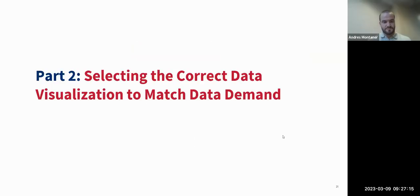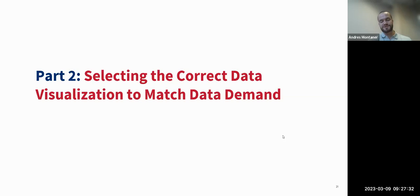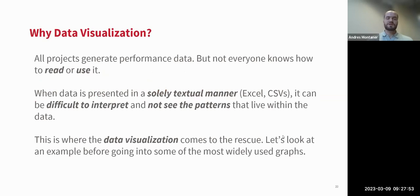That brings us to Part Two. We've described the process of building a data processing system that can be used to create new visuals for your programs. Now we want to get into examples and comparisons between different visualization types to ensure we're choosing the best visual to show program data to managers, funders, or internally.